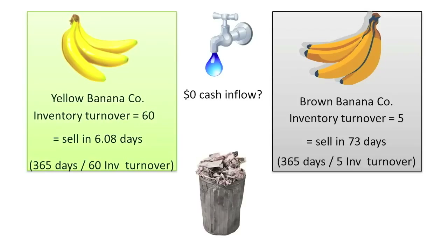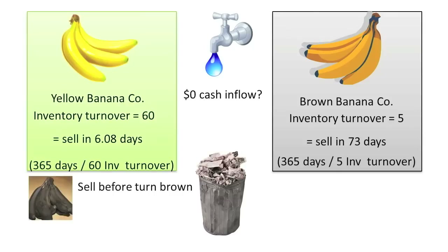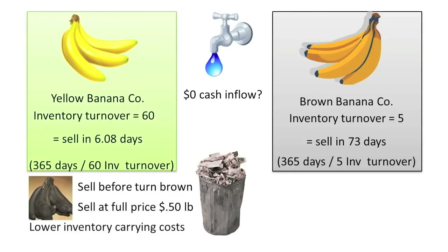Yellow's shorter days' sales of inventory indicates that its management is able to more quickly get its bananas sold to customers. By selling its inventory more quickly compared to Brown, Yellow will probably be more able to sell its bananas before they turn brown, sell its bananas at full price, lower its inventory carrying costs, and increase liquidity to pay off current liabilities when they come due.